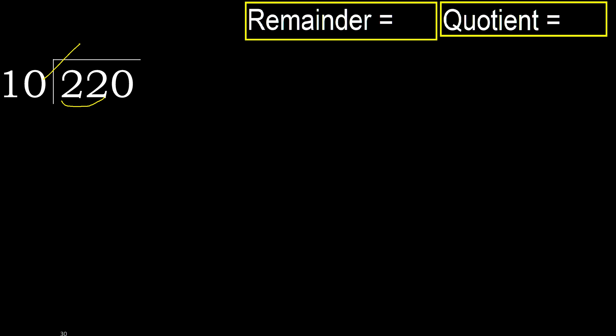10 multiplied by which number is nearest to 22 but not greater? 10 multiplied by 3 — 30 is greater. Multiply by 2 — 20 is not greater, okay.